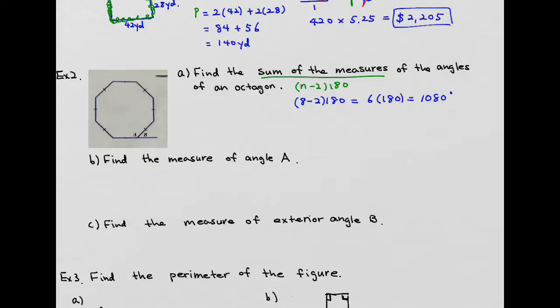So what you need to do is from the total angle, which is 1080, you're going to divide this by eight, which gives you each angle is about 135 degrees. And so angle A is going to be 135.